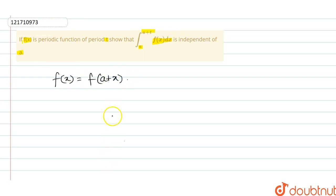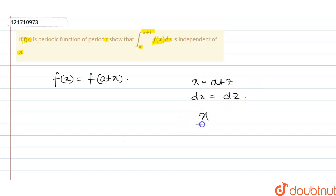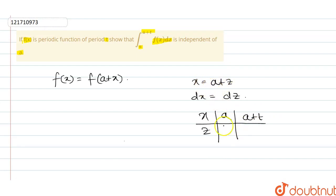Then I am going to assume that x equals to a plus z. So dx equals to dz. Now I am going to change the limit. When x is the lower limit, a gets mapped to the lower limit, and a plus t goes to the upper limit.